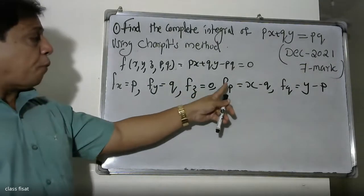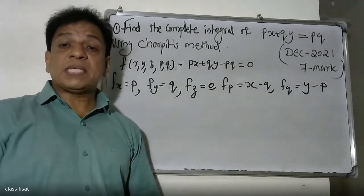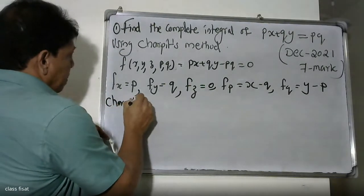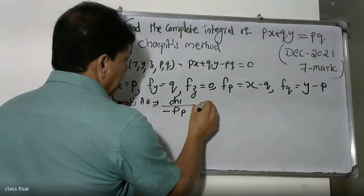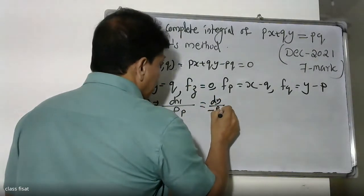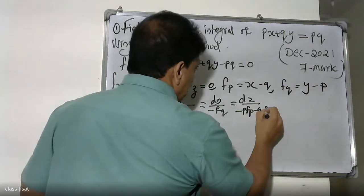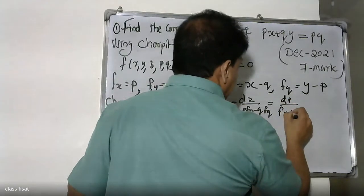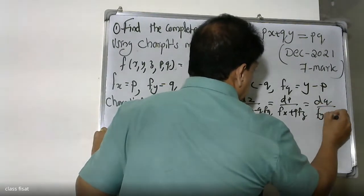We have fp equals x minus q and fq equals y minus p. Now Charpit's auxiliary equation is: dx by minus fp equals dy by minus fq equals dz by minus p times fp minus q times fq equals dp by fx plus p times fz equals dq by fy plus q times fz.